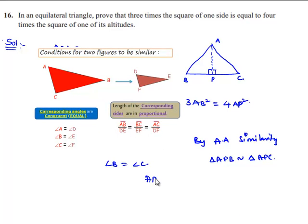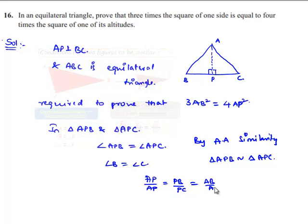So, here AP by AP will be equal to PB by PC, which equals 1. So, we can say PB by PC equal to 1, which implies PB is equal to PC. As PB is equal to PC, that will be half times BC.